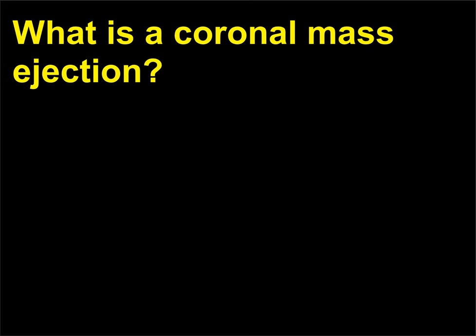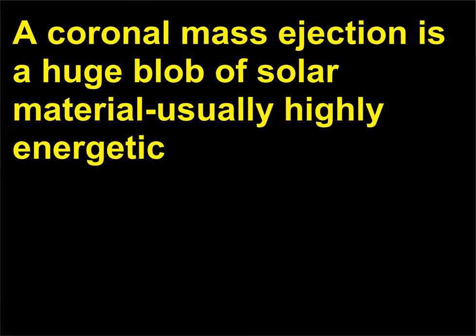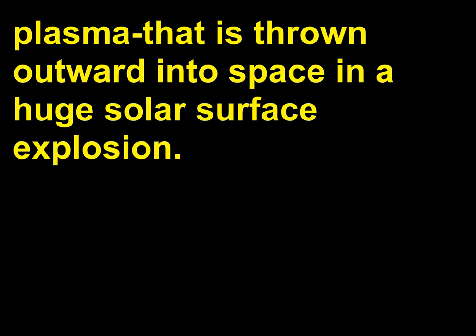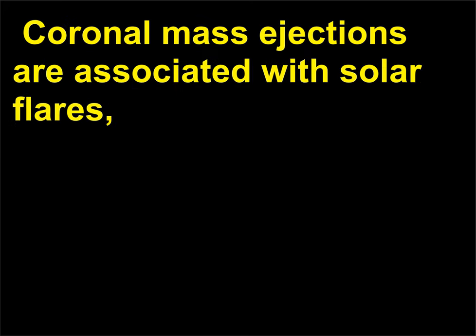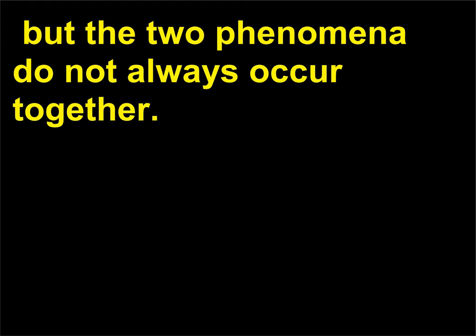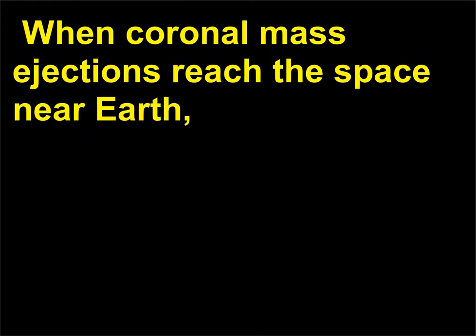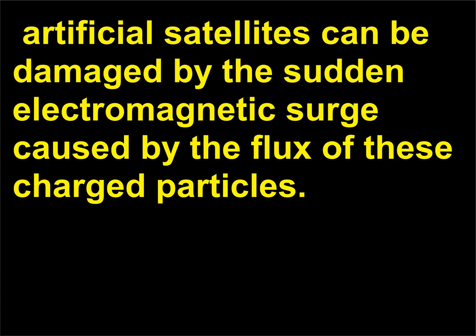What is a coronal mass ejection? A coronal mass ejection is a huge blob of solar material, usually highly energetic plasma, that is thrown outward into space in a huge solar surface explosion. Coronal mass ejections are associated with solar flares, but the two phenomena do not always occur together. When coronal mass ejections reach the space near Earth, artificial satellites can be damaged by the sudden electromagnetic surge caused by the flux of these charged particles.